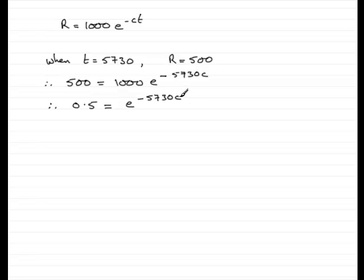So next, to get to C, I need to take natural logs of both sides. So we have the natural log of the left hand side, 0.5, equals the natural log of E to the minus 5,730 C. Now,